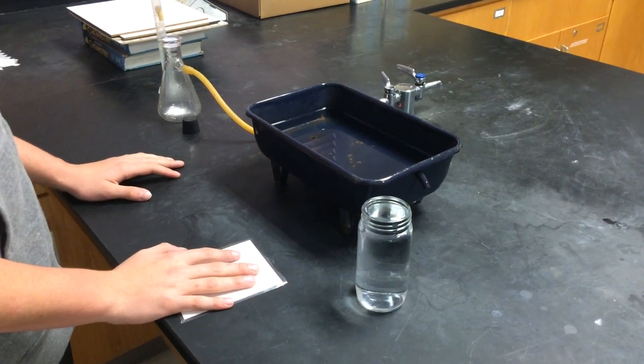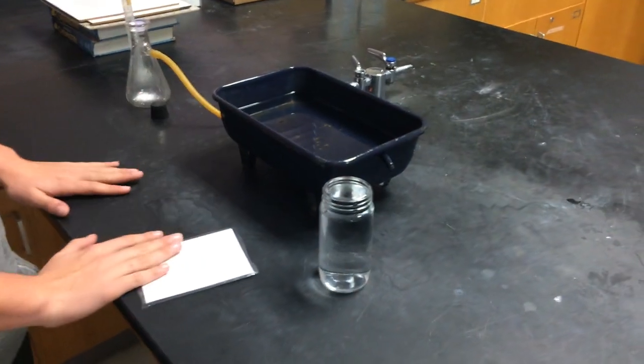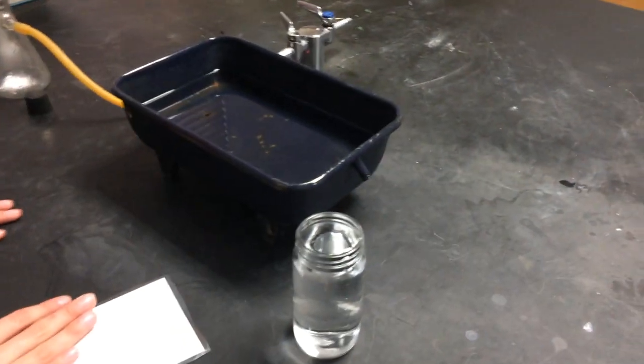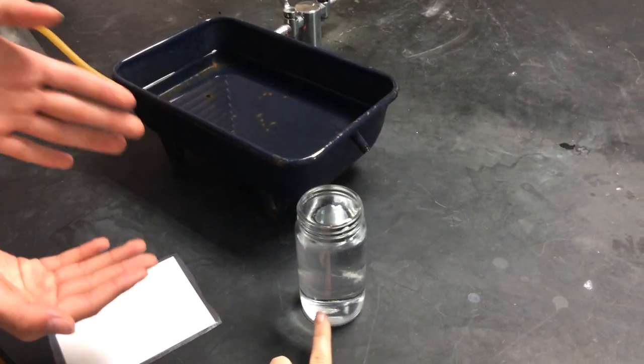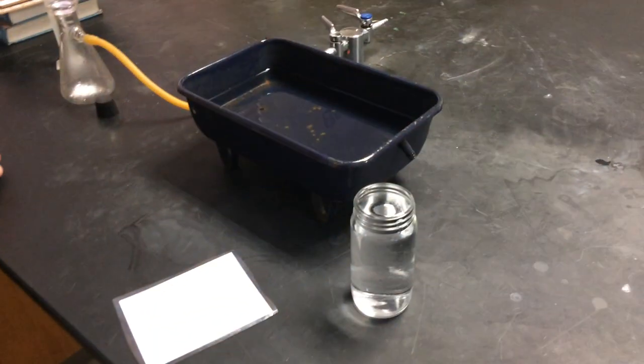Okay, so today we are going to show you how to use a water trough to collect gas. What we have here is a mason jar completely full of water to the very tip top, and we're going to show you how to flip it into the water trough.